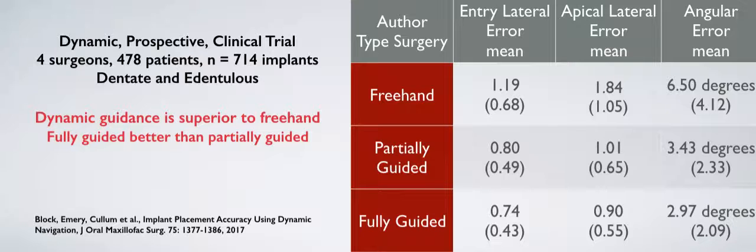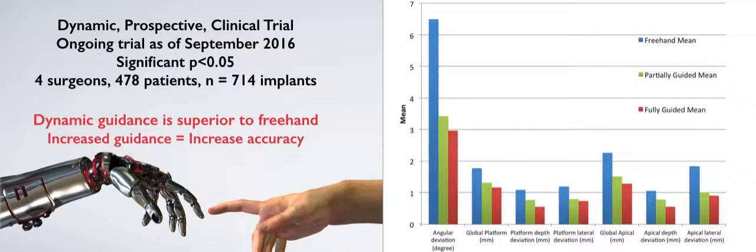And what do we see? In every measure, as we go from freehand to partially guided to fully guided, we have a statistically significant improvement in accuracy and precision. This is the same study, only with a graphic representation of all the different measures.